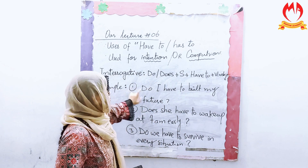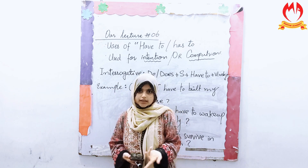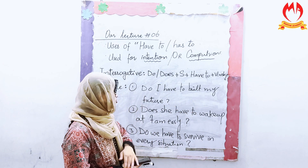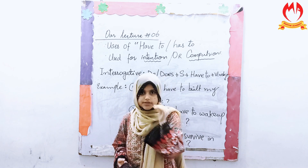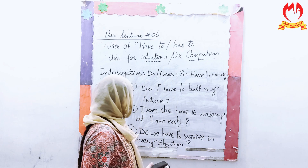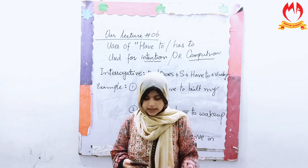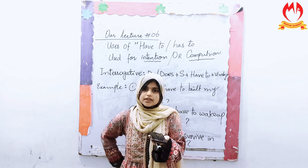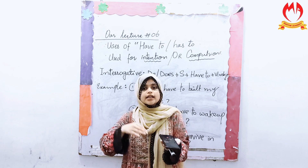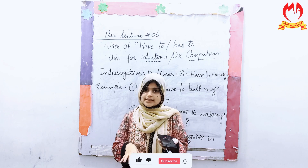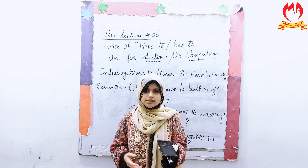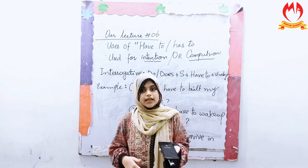So the first example is: 'Do I have to build my future?' — meaning, am I supposed to build my future? The question mark shows it is a question. The second one is: 'Does she have to wake up at 7 a.m.?' — we use 'does' for 'she'. And then: 'Do we have to survive in every situation?' These terminologies are basically used for compulsory and intentional concepts, helping us improve our English language.